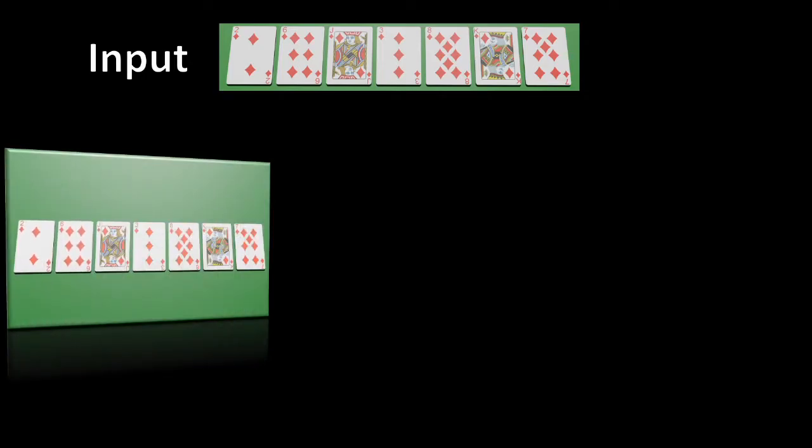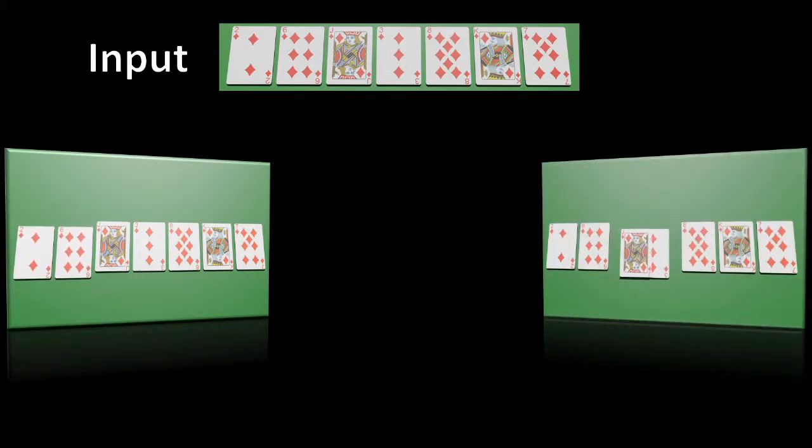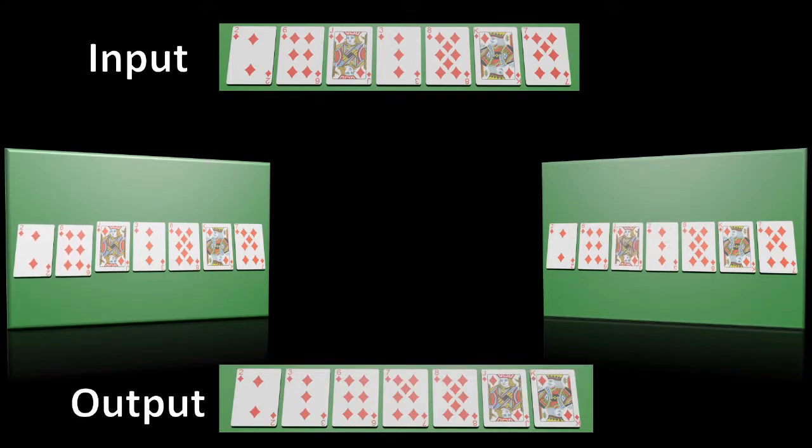Our goal is to take our input, this unordered set of playing cards, and over a series of passes, we will compare adjacent cards and swap them if they are unordered in order to arrive at our output. In this case, playing cards that are sorted in ascending order.